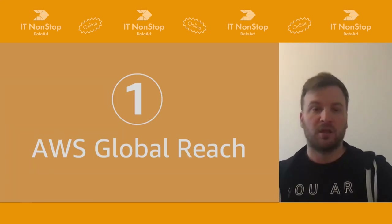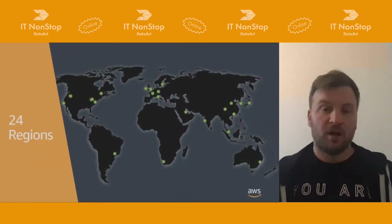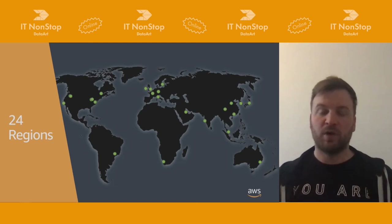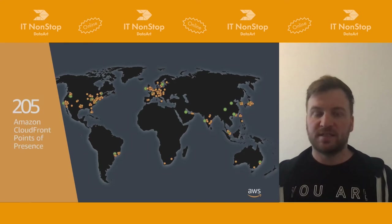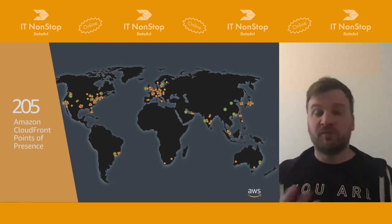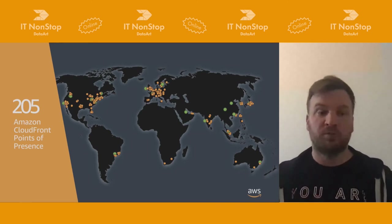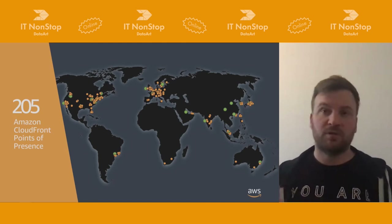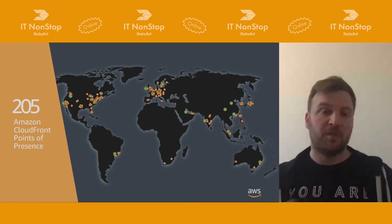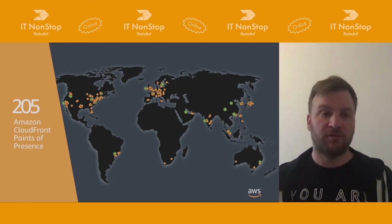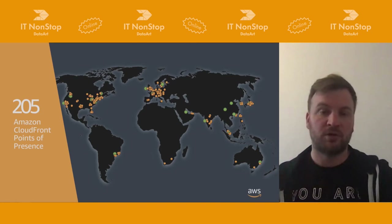Let's talk about AWS global reach. We have 24 regions, shown as green dots on the map — points of presence where we have infrastructure. In addition to regions consisting of multiple availability zones, we have CloudFront points of presence. Because the closer we are to the customer the better the experience and minimal latency, we create additional points of presence closer to customer groups around the world to deliver content like video streams with low latency.